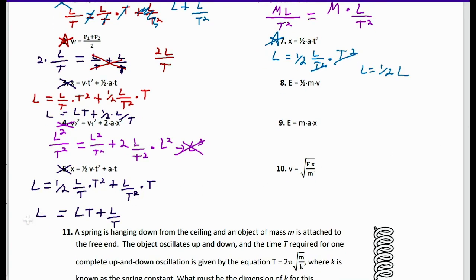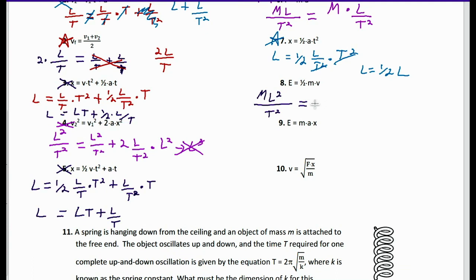Number eight: E equals one-half MV². Energy E is M × L²/T². We can ignore the one-half. So we have M times V, where V is L/T — but V is not squared here, just L/T. The left side is ML²/T² but the right side gives ML/T. That doesn't work out, so equation eight is not dimensionally correct.